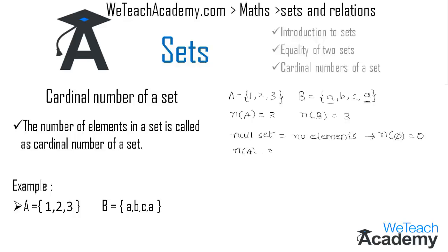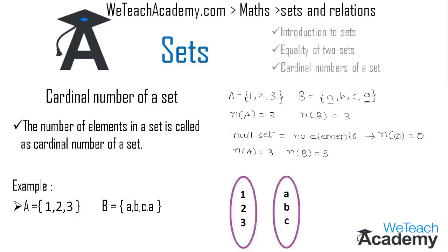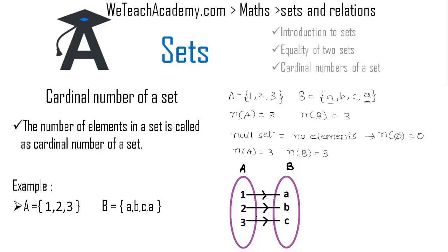Now let us represent this in the form of a Venn diagram. We draw two Venn diagrams: the first represents set A with its elements, and the second represents set B with its elements. We then map the elements of A with elements of B. The first element one of set A maps to the first element 'a' of B. Similarly, two maps to b, and three maps to c. Since every element of set A is mapped with one and only one element of set B, we call this a one-to-one correspondence. We can represent the correspondence as A corresponding to B.